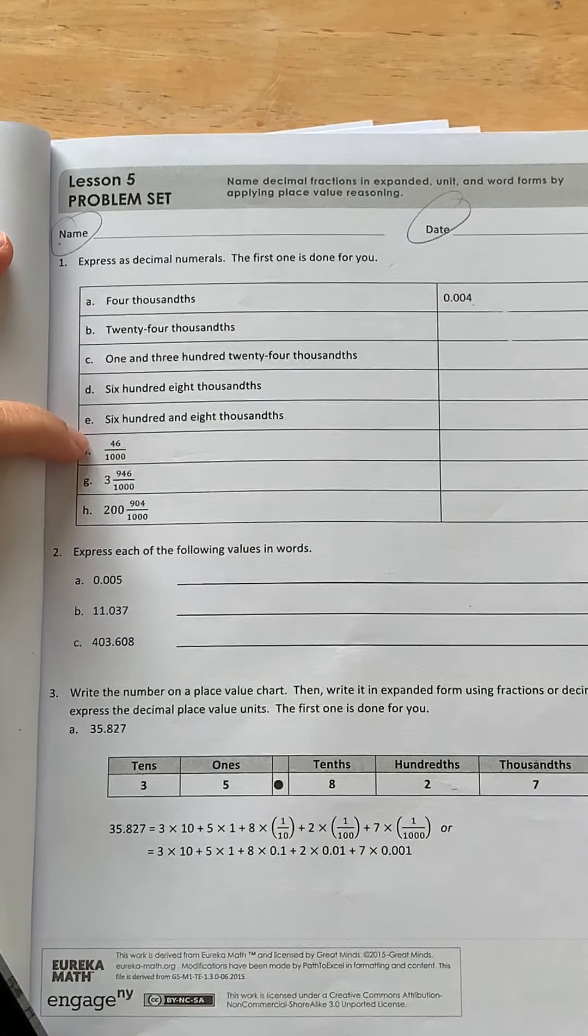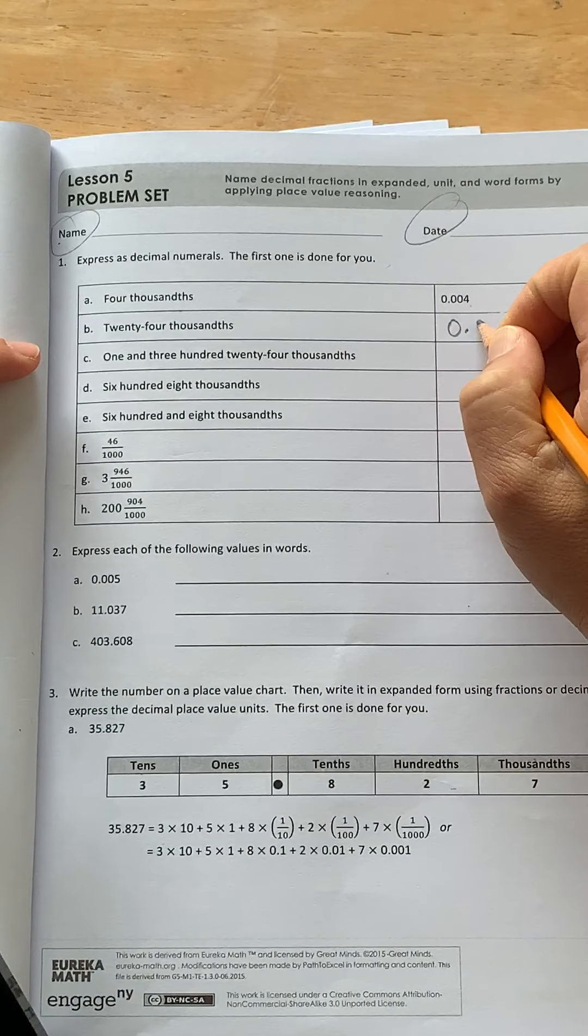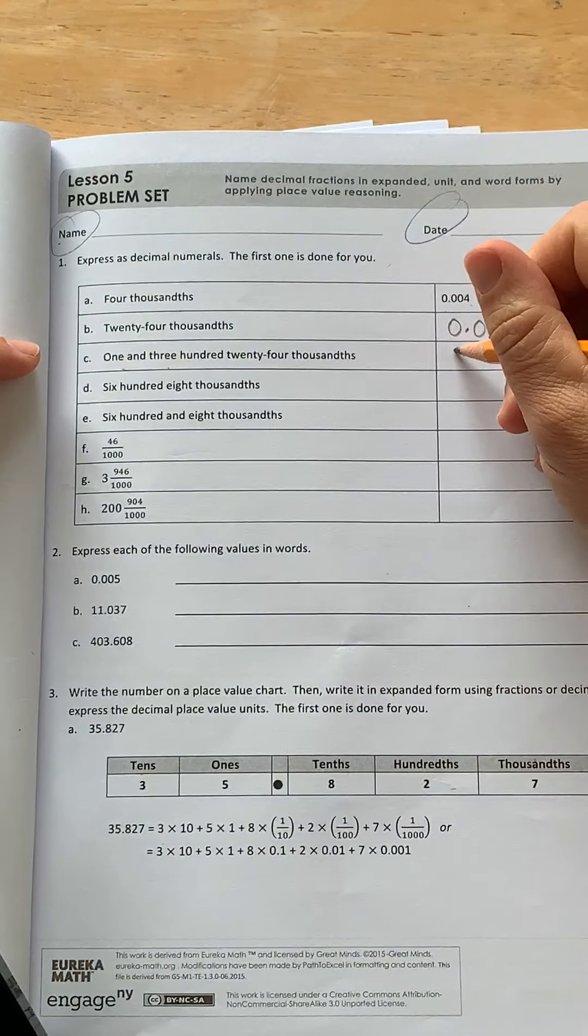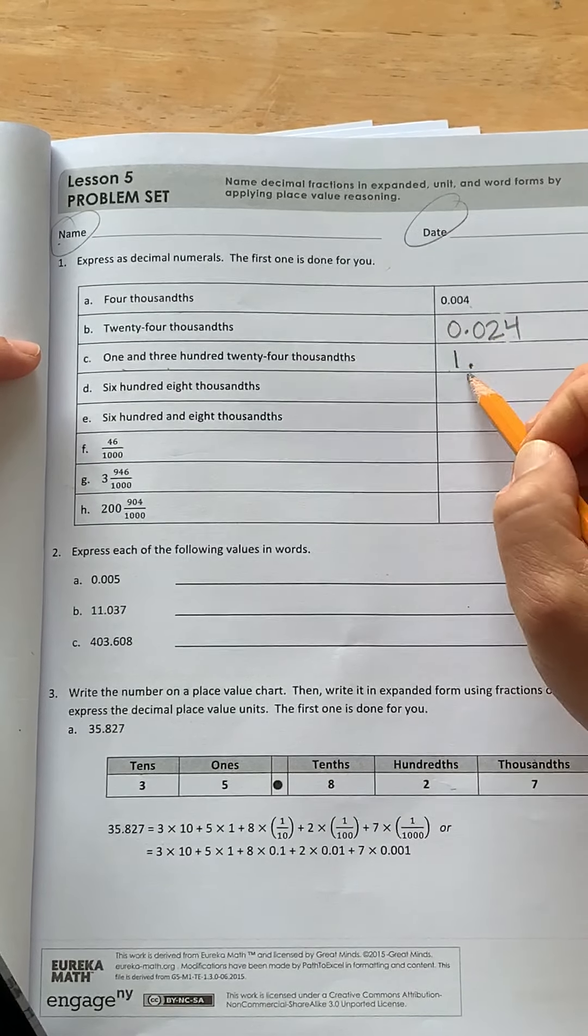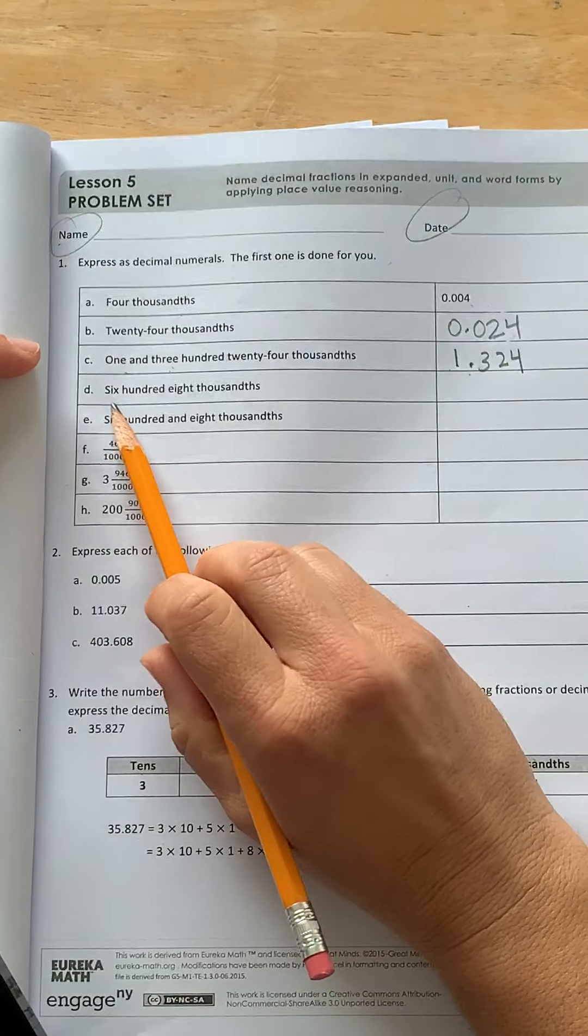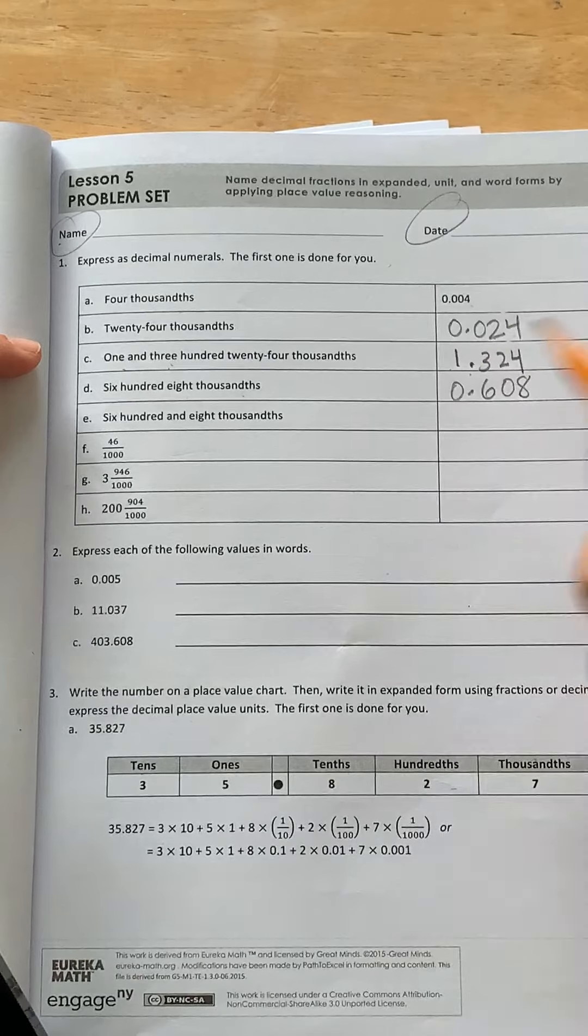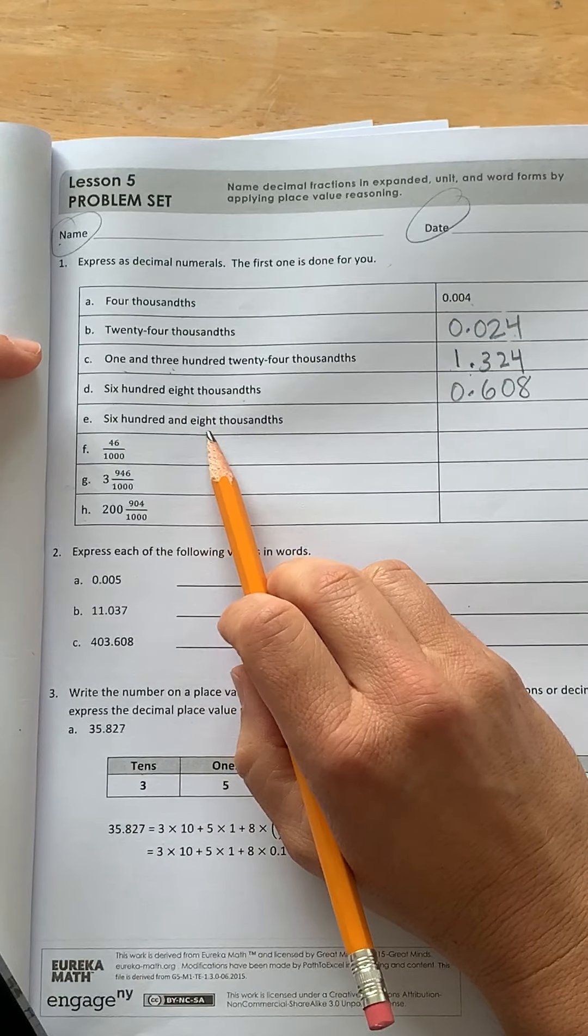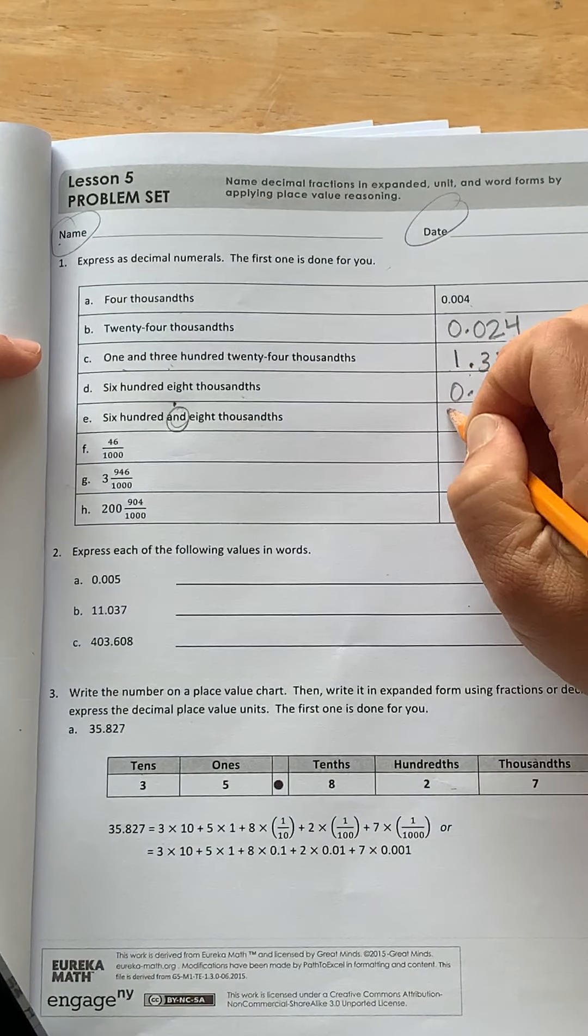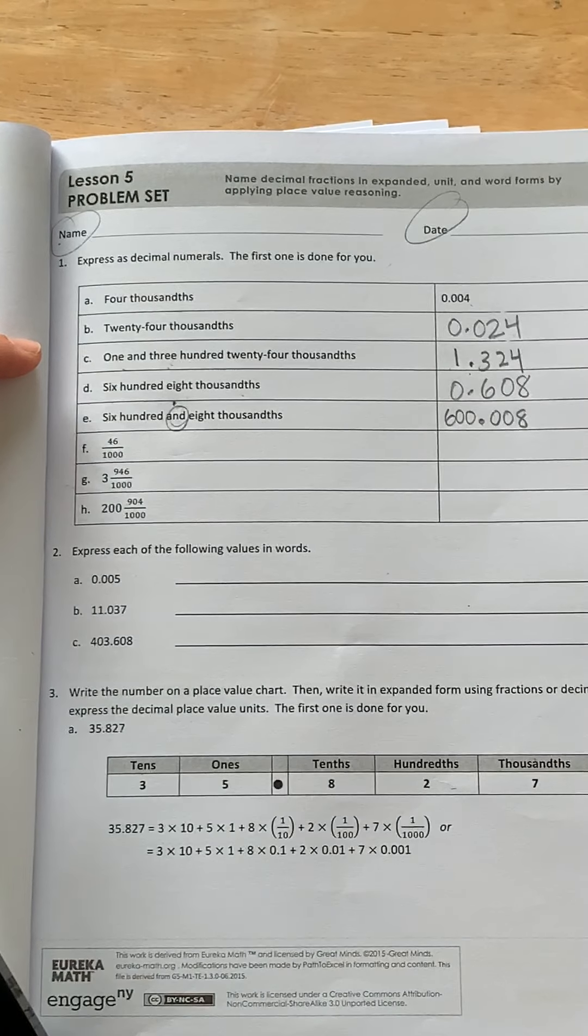Okay, you should be done with B to H if you are continuing to watch. So let's write the answers. One and, so when it says and, I know that's the decimal. One and three hundred twenty-four thousandths. Six hundred and eight thousandths. Oh, this and indicates that it's the decimal. So let me put in the decimal. So it's six hundred and eight thousandths. Tenths, thousandths. Yeah.